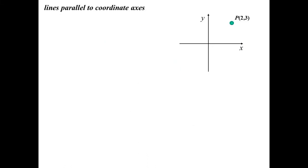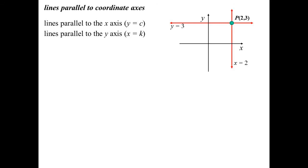Okay, well lines parallel to the coordinate axes - we saw that in two dimensions. There's my point P which is (2,3). If it's parallel to the x axis, we get y as a constant, in this case y is 3. Parallel to the y axis, we get x as a constant, so x is 2.